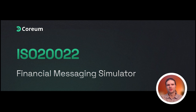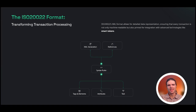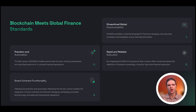Hello and welcome to this demonstration of the ISO 20022 simulator built on the Corium blockchain. In this simulator, Corium allows for the integration of smart contracts into financial messaging, which can facilitate automated business logic and streamline global financial transactions.